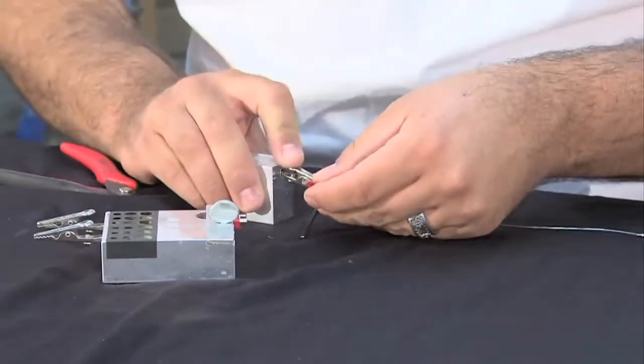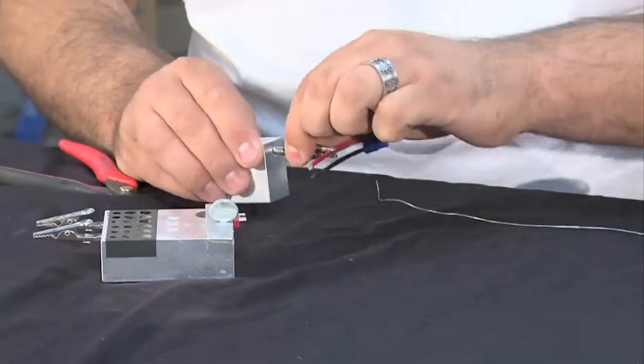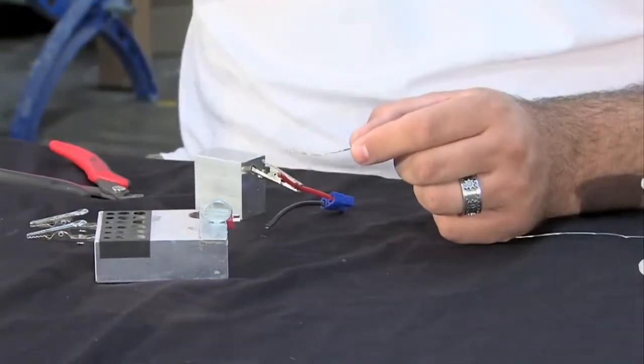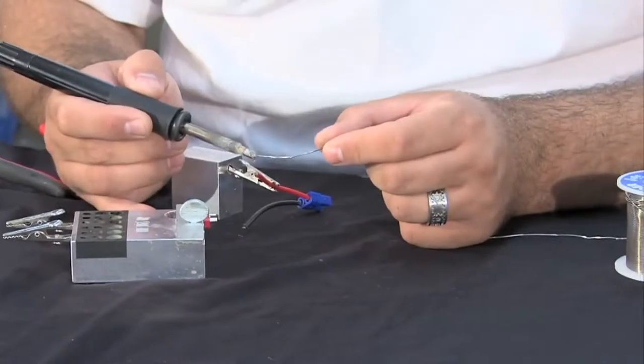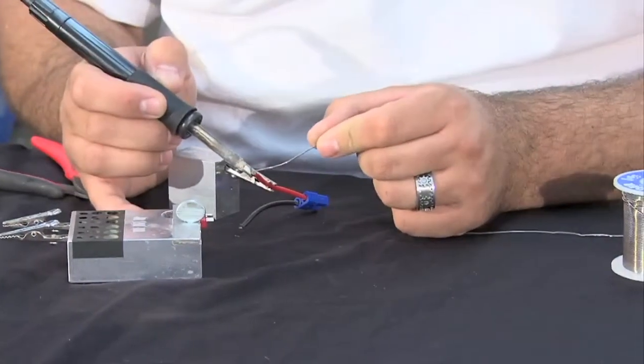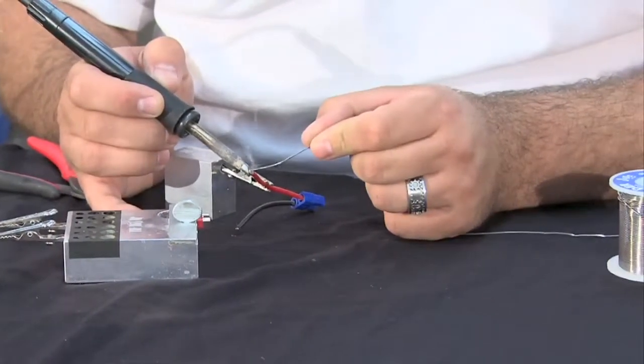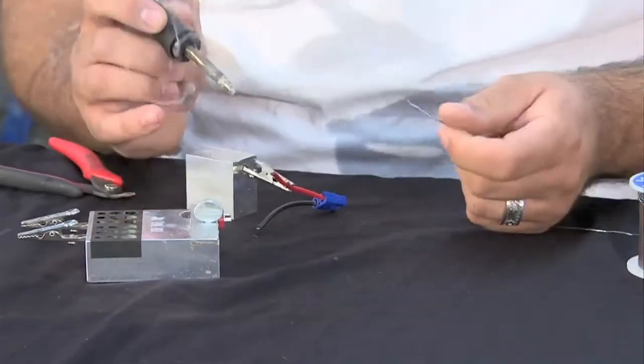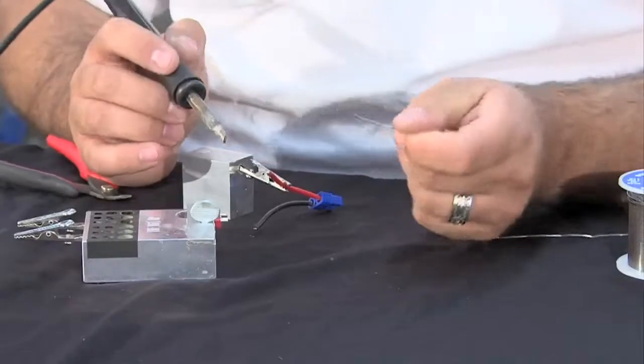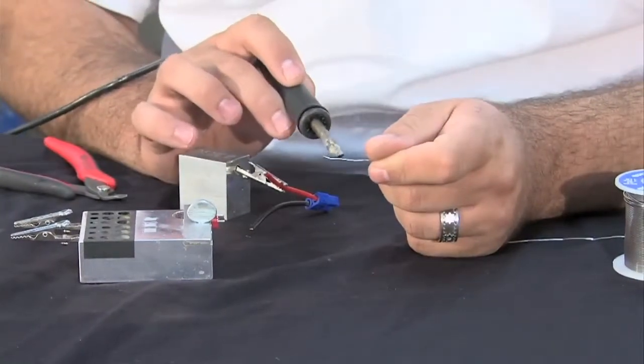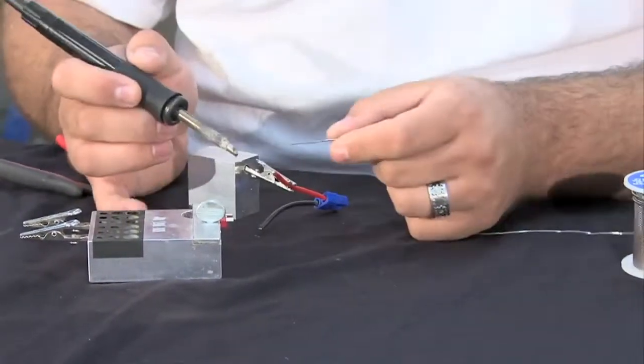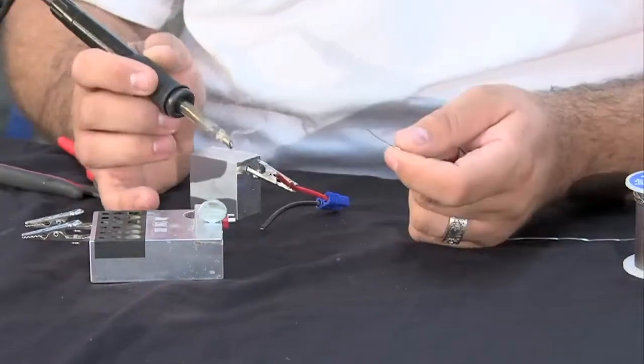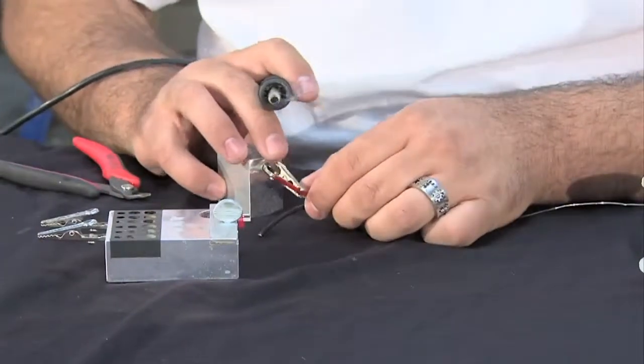Once you take that off, pre-tint your wire, add a little solder to it, let the heat transfer to the wire, and add solder to the wire. What this is doing, this is resin core solder. There's actually a little bit of flux inside this. And when it smokes, that's the resin core solder actually burning off and cleaning the wire.